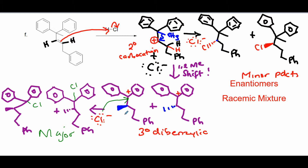Remember this carbocation is planar, so the shift could occur from the top face or bottom face. If the methyl attaches from the bottom face, you get the di-benzylic tertiary carbocation with one stereochemical arrangement. If the methyl shift happens from the top face, you get the tertiary di-benzylic carbocation with the other arrangement. The chloride lost during H addition comes back to attack the plus sign of either carbocation intermediate.